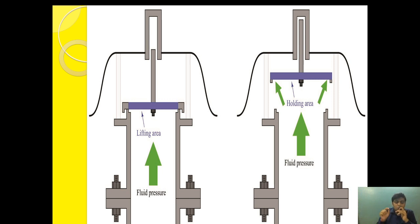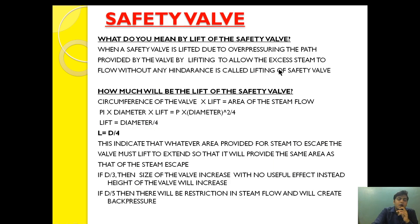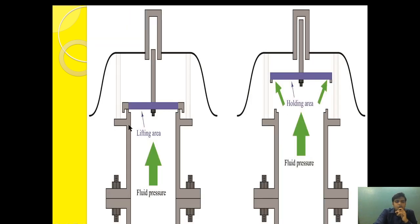The second question asked is: what is the ideal lifting of a safety valve? A formula is given for the calculation of the lift. This is the safety valve bonnet where the steam will flow, and this is the valve which is sitting on the surface. The lifting area is the area covering the bonnet steam flow path. When the pressure is exceeded, the valve lifts up and the excess steam is released.